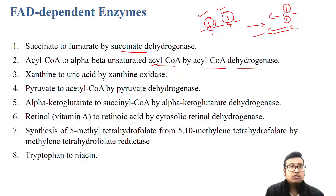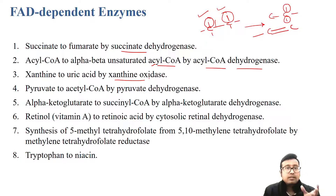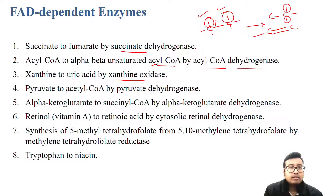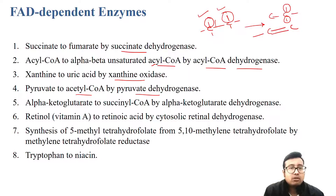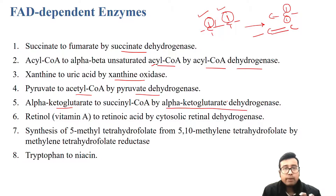Next, xanthine to uric acid by xanthine oxidase — very important, especially related to allopurinol and gout treatment. Also, pyruvate to acetyl-CoA: FAD is a cofactor in the PDH reaction (link reaction), which has three enzymes and five cofactors. If you remember PDH, you can also remember alpha-ketoglutarate dehydrogenase — a similar complex type of enzyme.